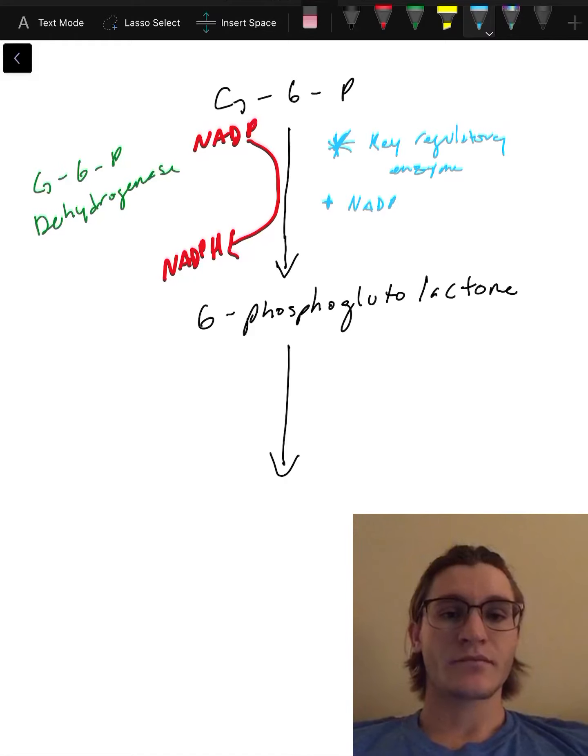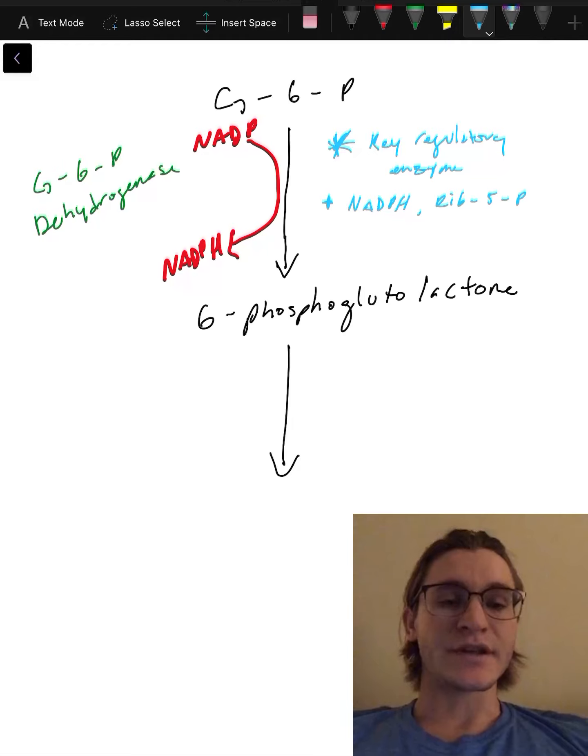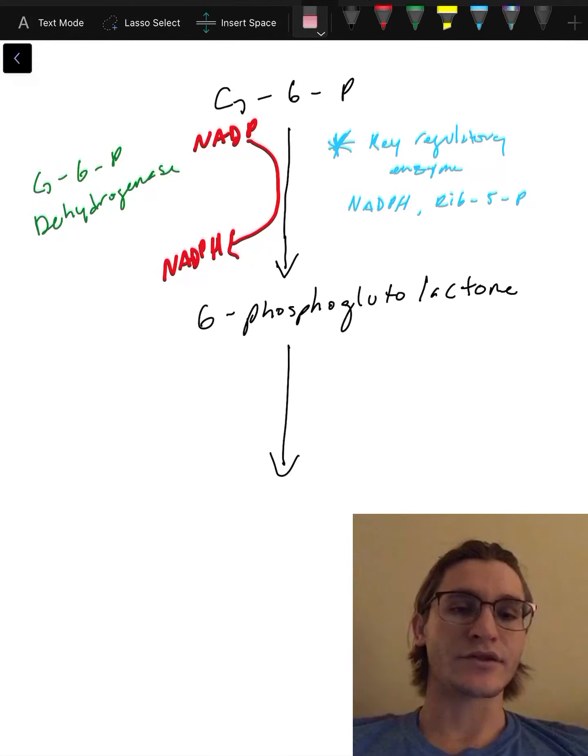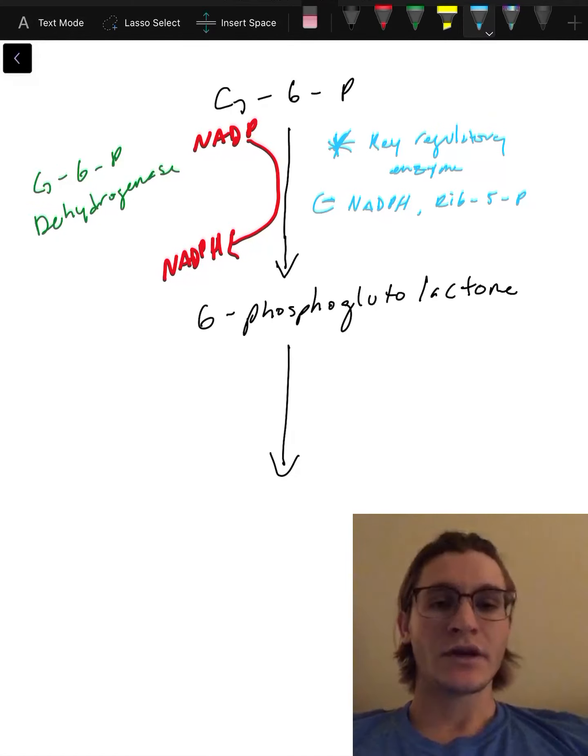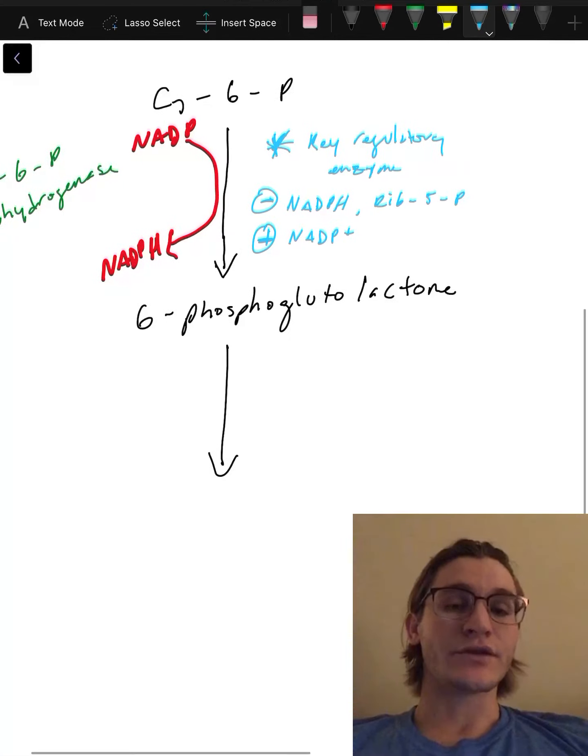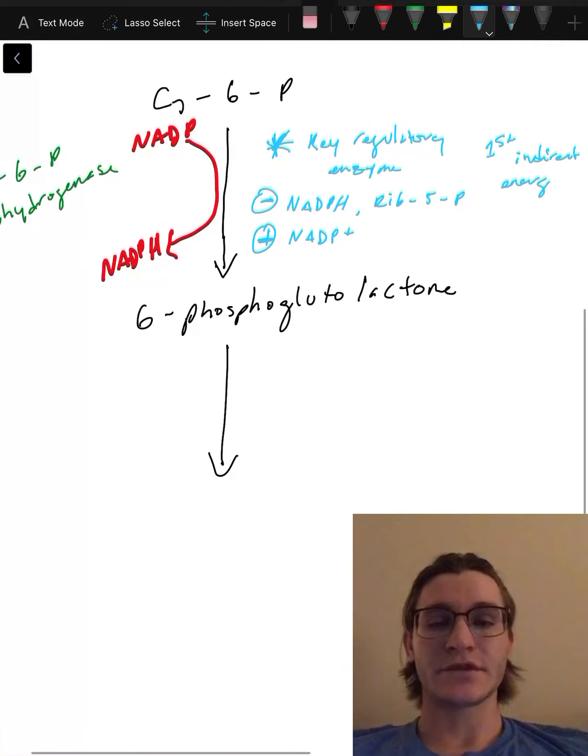I made a mistake here—it's negative inhibition. I'm gonna go back and fix it. But negative inhibition is NADPH and ribose 5-phosphate, because those are our products. If we have our products, we don't need this to occur anymore. So that'll be a negative or inhibitor of our key regulatory enzyme. Our activator will be NADP+, so if we have NADP+ then we could use it to make NADPH.